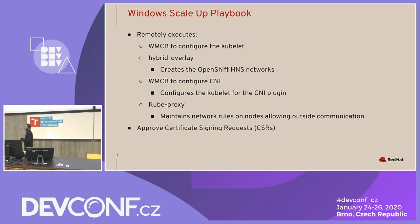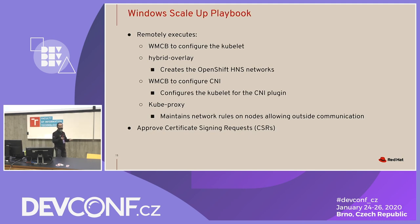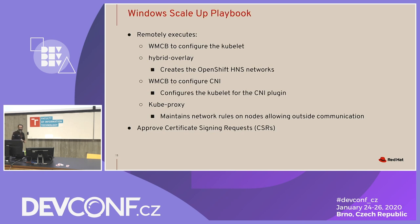The other thing that happens when WMCB configures the kubelet is the node starts generating certificate signing requests. Someone needs to sign and approve those requests so the cluster can validate the node and allow it to join. The scale-up playbook also takes care of approving those certs.